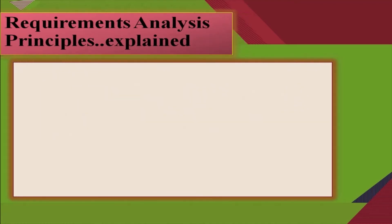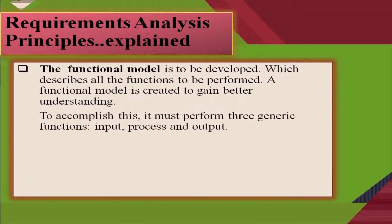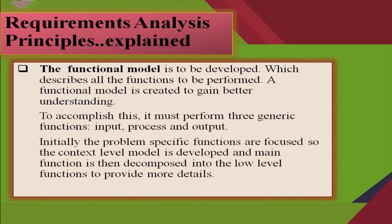The second principle is about the functional model, which is to be developed and describes all the functions to be performed. A functional model is created to gain better understanding. To accomplish this, it must perform three generic functions: input, process and output. Initially, the problem-specific functions are focused, so the context level model is developed, and the main function is then decomposed into low-level functions to provide more details.